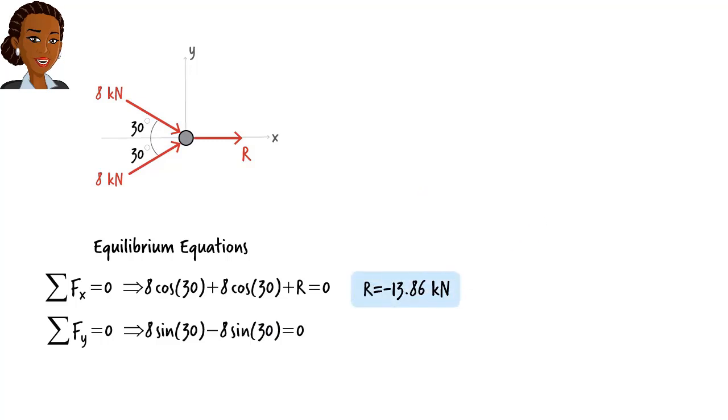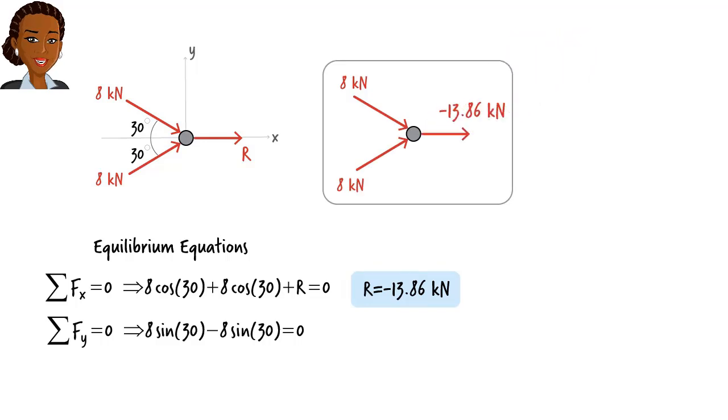We also need to check the second equation to make sure it is satisfied. Yes, the sum of the forces in y direction is indeed zero. What does this negative sign mean? It means the direction of the vector is opposite to the direction shown on the diagram. Put it differently, for the particle to be in equilibrium, the horizontal force must be pointing toward the particle. We can show the result of our simple analysis either this way, by writing negative 13.86 next to the vector pointing away from the particle, or we can write positive 13.86 for the force magnitude, but reverse the direction of the arrow, like this.